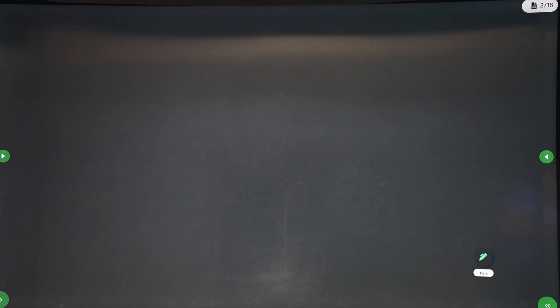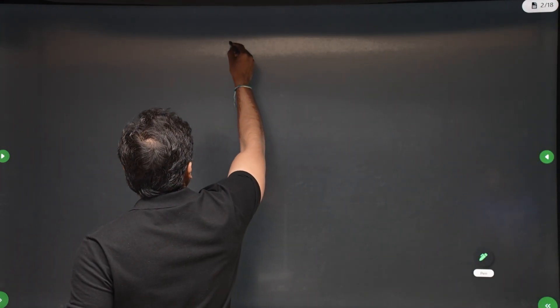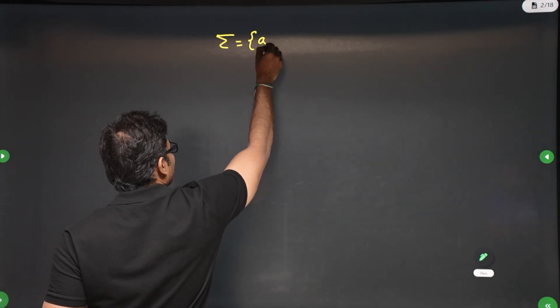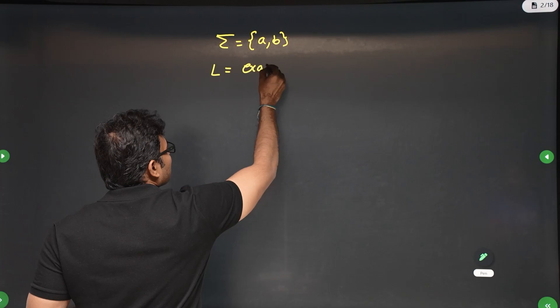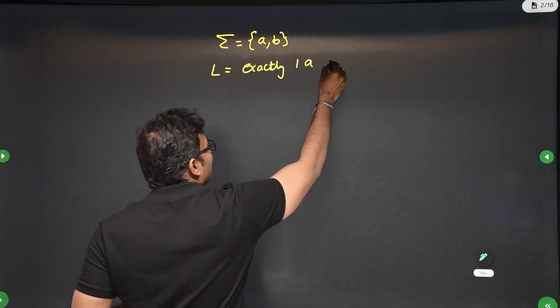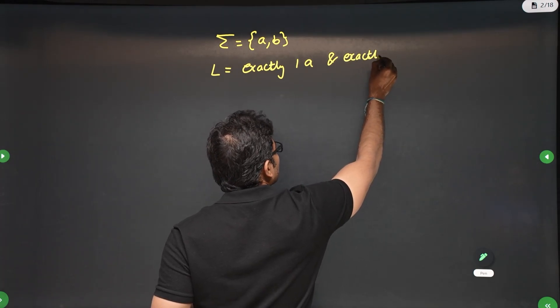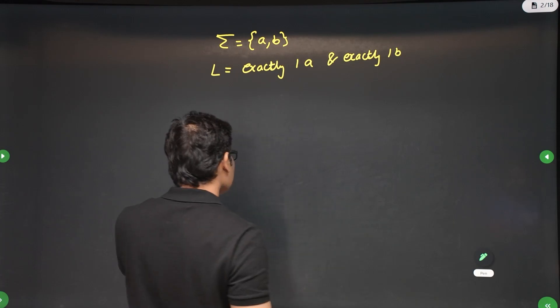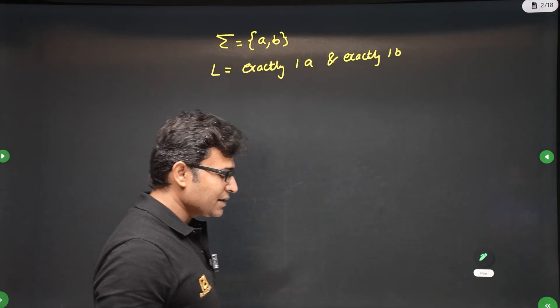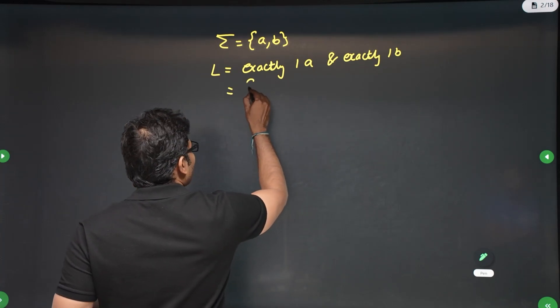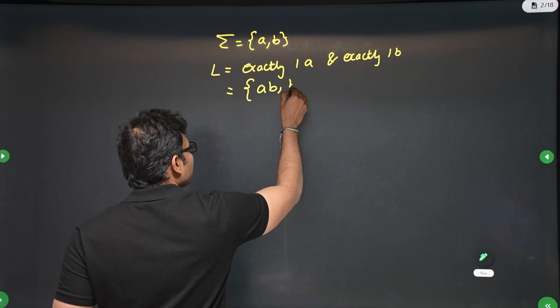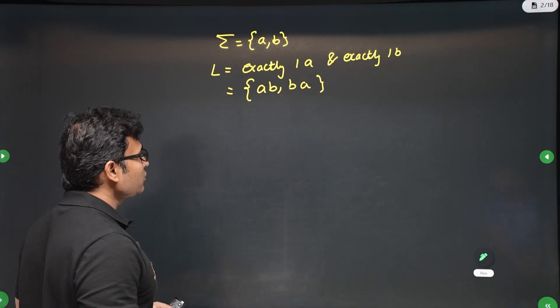We will take a simple problem to introduce grid machines. Let sigma equal to {a, b} — two symbols. The language is the set of all strings which contain exactly one a and exactly one b. If there is exactly one a and one b, this is a finite language containing only two strings: ab and ba. You have to accept only this finite language.